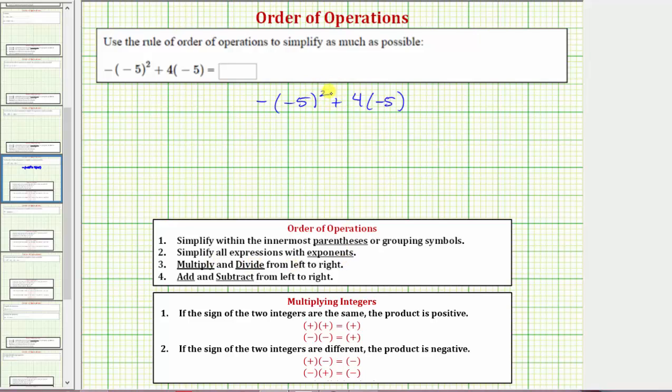Here we have an exponent of two. We have the square of negative five, which means we have two factors of negative five. Square of negative five is equal to negative five times negative five, which equals positive twenty-five.